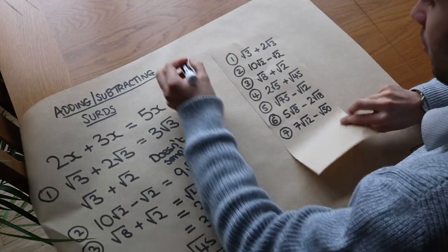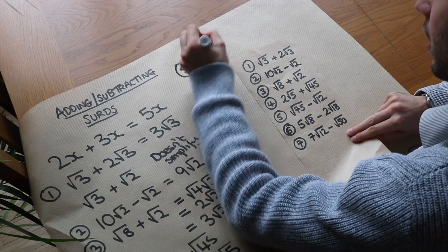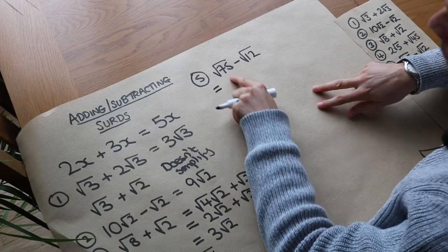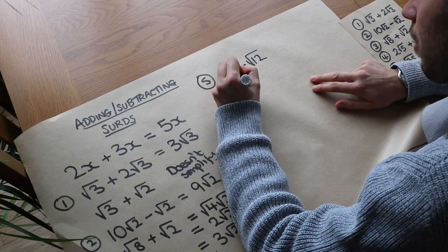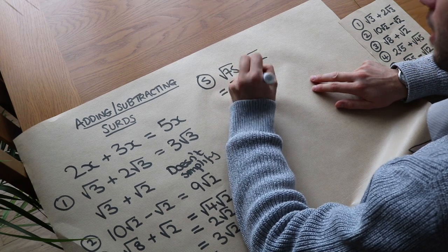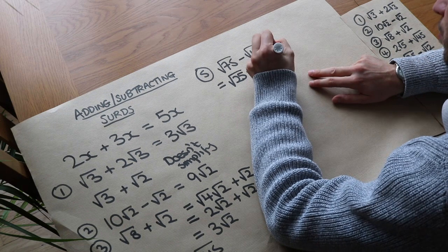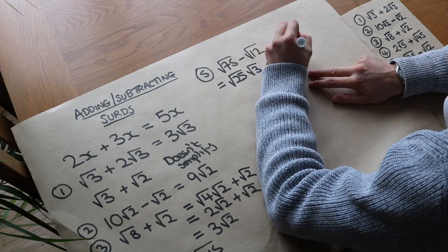What about these other ones? We've got question 5. We've got root 75 minus root 12. We need to simplify both of these. What's the biggest square number that goes into 75? It's 25, so it's root 25 root 3 because 25 times 3 is 75 minus biggest square number 12. It's root 4, so 4 times 3 is 12, so it's root 4 root 3, putting the square numbers first in each case.